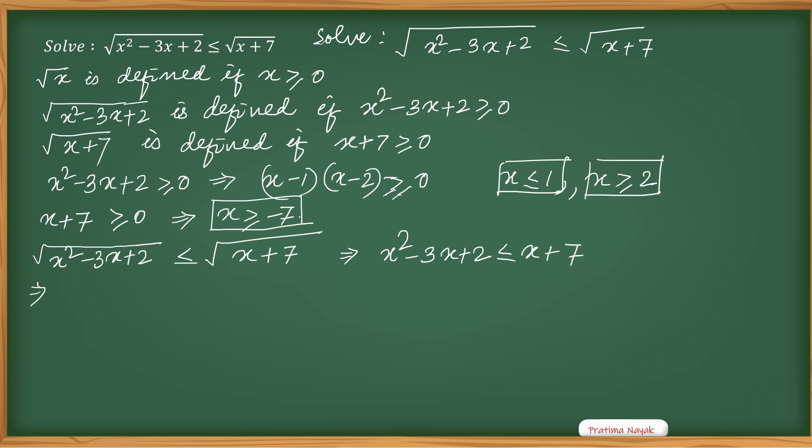Taking it to the left side, I will get x²-4x-5 ≤ 0.